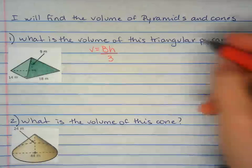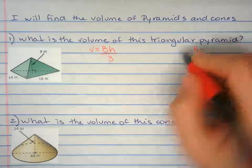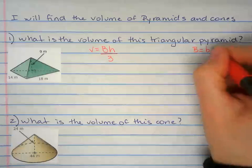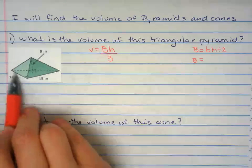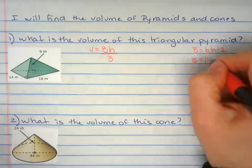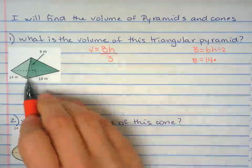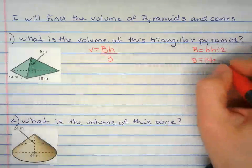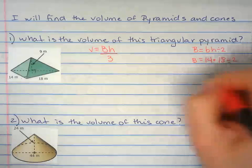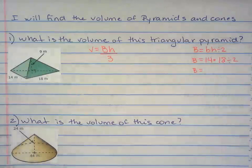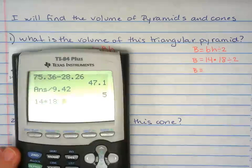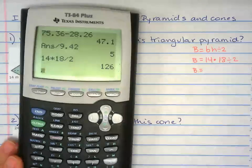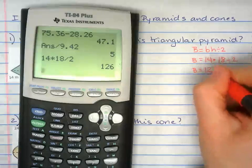Area of the base and the base is a triangle. So base times height divided by two. So the base of the triangle right there 14. The height of the triangle right there is 18. Divide that by two. 14 times 18 divide by two. So the area of the base is 126.